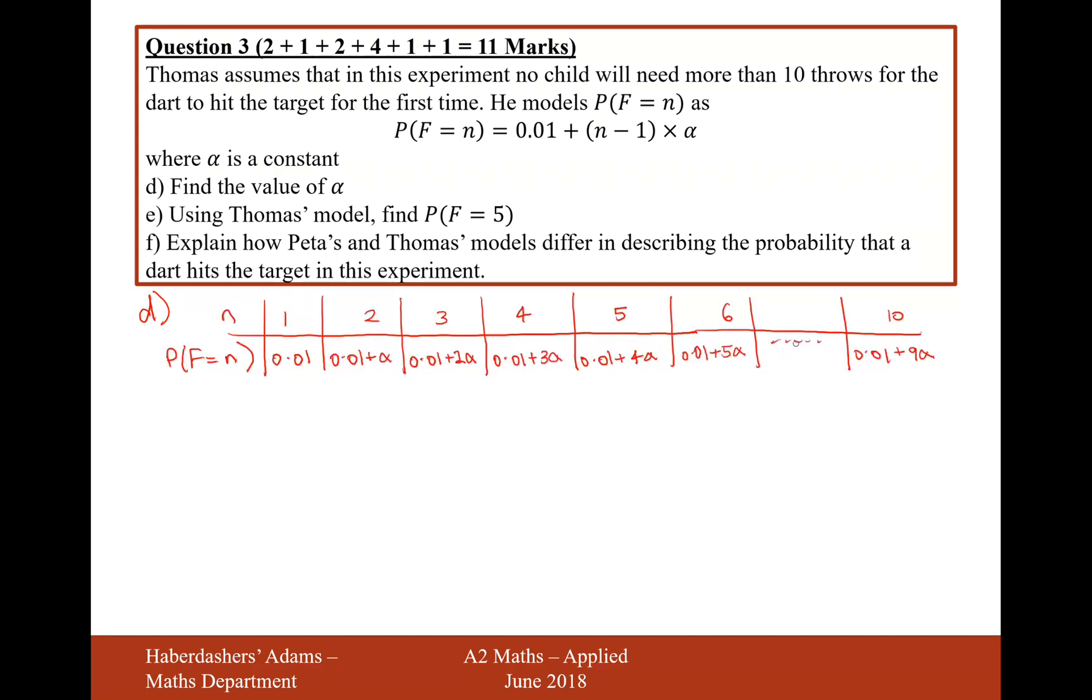Okay, so here we are. So I've just skipped the last kind of couple there. So n is representing the number of different times that it's going to take them to hit the dartboard for the first time. And then the probability when n equals 1 is going to be 1 minus 1, which is 0 times alpha, add 0.01. So that's just 0.01. For 2, it's going to be 2 minus 1 times alpha. So that's just alpha and then add your 0.01. For something like 6, it's going to be 6 minus 1, which is 5, times alpha. So it's going to be 5 alpha and then plus your 0.01 on the end.